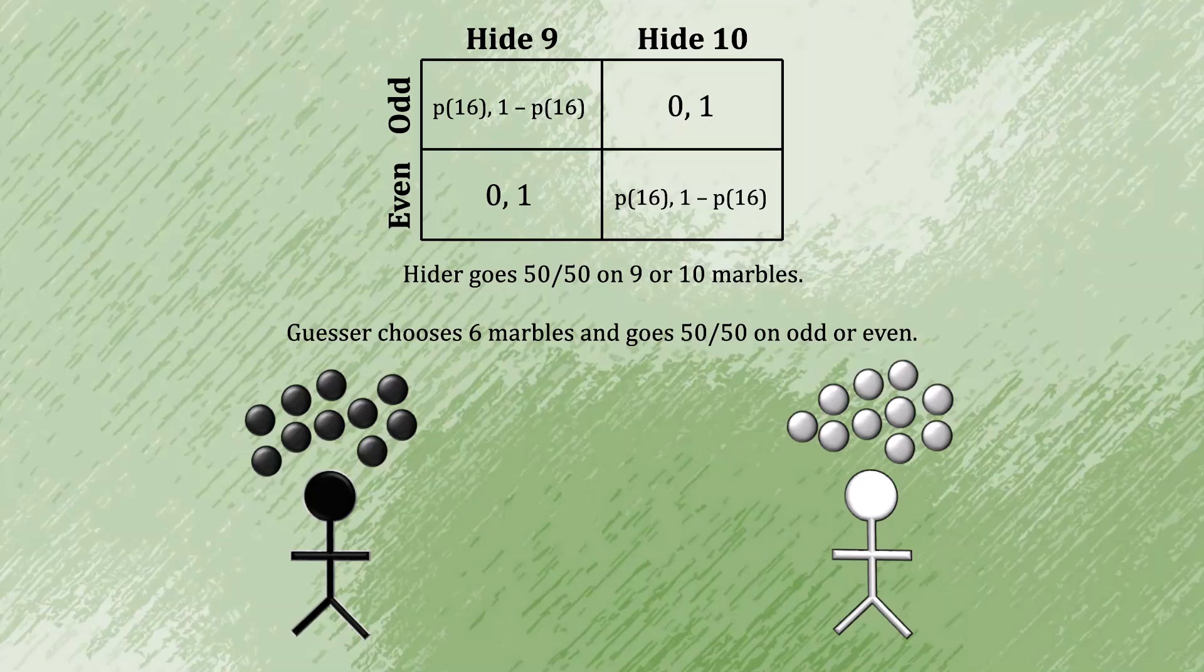Once again, it is difficult to calculate what that exact probability is. But it's also superfluous. We know that it's not going to be as good as winning for sure. In fact, it's going to be slightly worse than that, at least. Consequently, the guesser should always be choosing 10 marbles in this first round, so that when they guess correctly, they win the game outright.